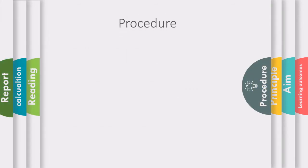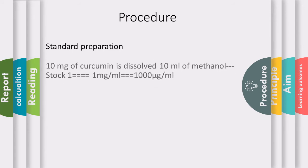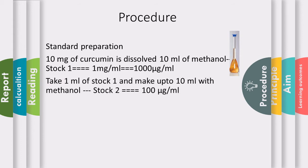Coming to the procedure, we have to prepare the standard curcumin solution. We will take 10 mg of standard curcumin and dissolve in 10 ml of methanol; this will be labeled as stock 1, which equals 1 mg per ml or 1000 microgram per ml. From stock 1, we will take 1 ml and make up to 10 ml with methanol, labeled as stock 2, which will contain 0.1 mg per ml or 100 microgram per ml.